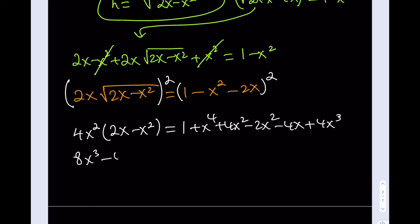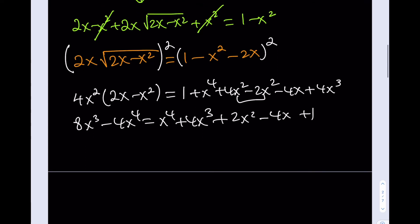Let's distribute this. 8x cubed minus 4x to the fourth equals x to the fourth plus 4x cubed plus 2x squared, minus 4x plus 1. I'd like to put everything on the same side so I can get a nicer expression, which is a quartic. Not very nice, but it's okay. I'm going to bring this 8x cubed with a minus sign, so it'll be subtracted. That's going to give me minus 4x cubed. And then I have the 2x squared minus 4x plus 1.